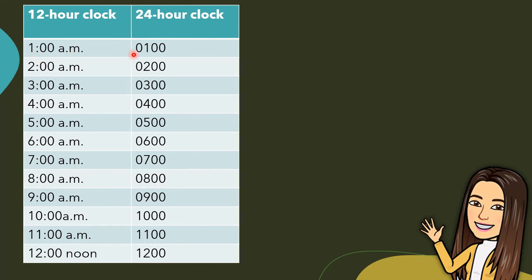1 a.m. is 0100. 2 a.m. is 0200. 3 a.m. is 0300. 4 a.m. is 0400. 5 a.m. is 0500. 6 a.m. is 0600. 7 a.m. is 0700.